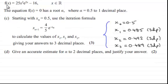Remember we had this function f(x), which equaled 25x²e^(2x) minus 16, where x was any real number, and we were told that the equation f(x) = 0 had a root α, where α equaled 0.5 to one decimal place.